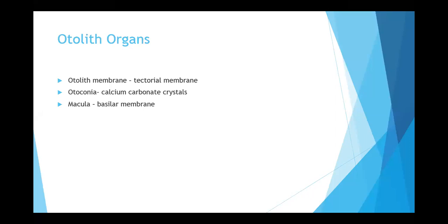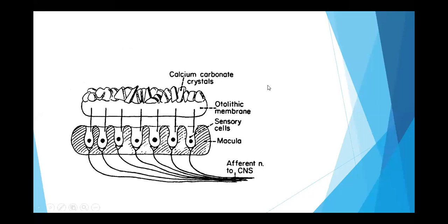The stereocilia of the hair cells insert into the otolith membrane. The macula is like the basilar membrane, which means the macula holds the hair cells. The hair cells sit on the macula, and the stereocilia go insert into the otolith membrane.